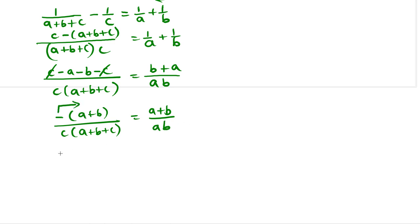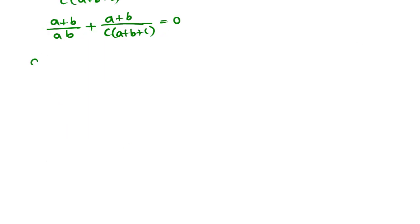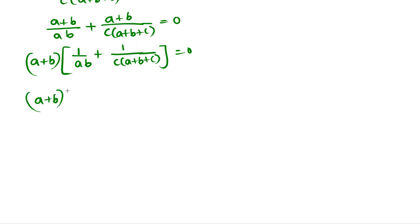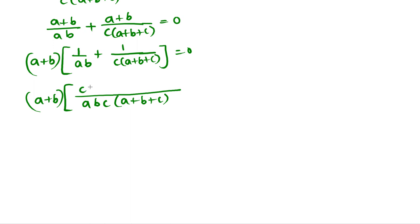Now sending the left side term to the right side, we get (A+B)/AB plus (A+B)/(C(A+B+C)) equals 0. Taking A plus B as common factor gives: (A plus B) times [1/AB plus 1/(C(A+B+C))] equals 0.